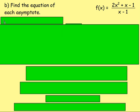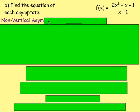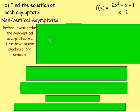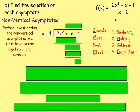Next, consider non-vertical asymptotes. Looking at the equation, 2x squared plus x take away 1 over x take away 1, this is improper because the degree of the numerator (2) is greater than the degree of the denominator (1). When the degree of the numerator is greater than or equal to that of the denominator, you must use algebraic long division to express the function as the sum of a polynomial and a proper rational function. We divide 2x² + x − 1 by x − 1.